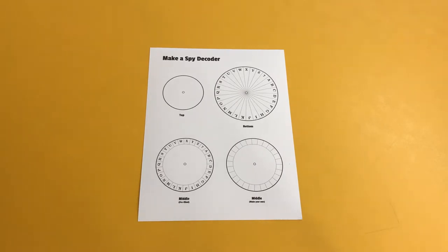Welcome to Activity Time Tuesday presented by Sugar Land Branch Library. Today we're going to show you how to pass secret messages using the spy decoder wheel.